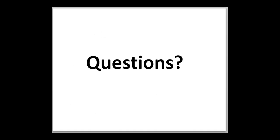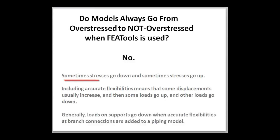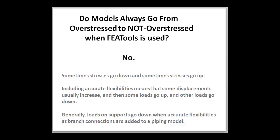Now let's answer a few questions commonly asked by pipe stress engineers using FEA Tools. When engineers see the S303 example, they often ask if FEA Tools CSER models will always resolve overstressed problems. The answer is no. When more applicable models of complex systems are constructed, sometimes the stresses go down, and sometimes the stresses go up. More often than not the stresses go down, but not always. Including more accurate flexibilities in a piping system analysis generally means that displacements at least some place are going to increase. When displacements go up, some loads in the system may go up while other loads go down. This is particularly true when the piping system has multiple branches and is closely coupled or considered tight.